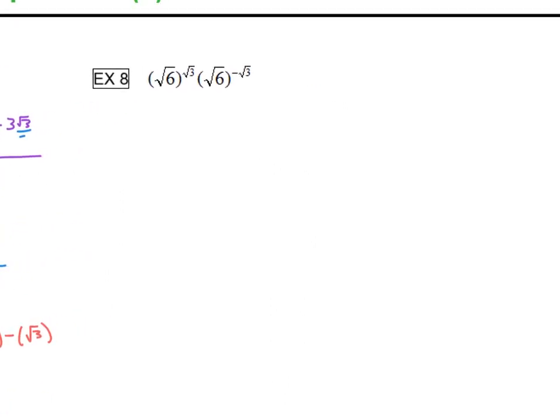All right, so our next one looks a little bit more complicated, well they both look complicated, but our base in this example is a square root of 6 and a square root of 6. So it doesn't matter what the base is, if it's the same thing then we know that we keep our base and we do an exponent property.